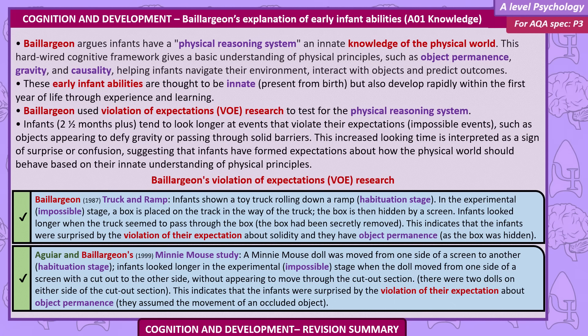Aguiar and Baillargeon's mini mouse study. A mini mouse doll was moved from one side of a screen to another (habituation stage). Infants looked longer at the experimental, impossible stage, when the doll moved from one side of a screen with a cutout to the other side without appearing to move through the cutout section — there were two dolls on either side of the cutout section. This indicates that the infants were surprised by the violation of their expectation about object permanence, as they assumed the continuous movement of an occluded object.